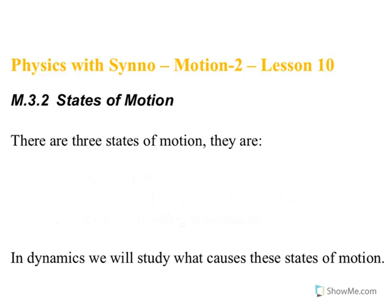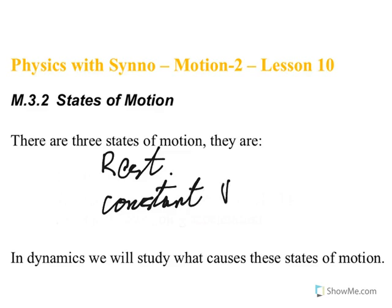All right, today in lesson 10 we're looking at states of motion. There are three states of motion. The first one is if the object's not moving, we say it's at rest. The second one is that it could be traveling at constant velocity, and the third state of motion is that it's undergoing acceleration.